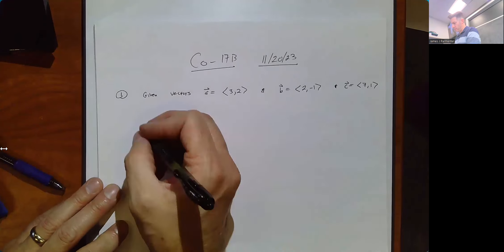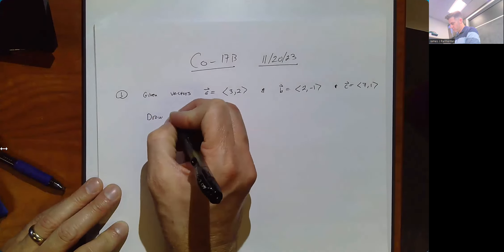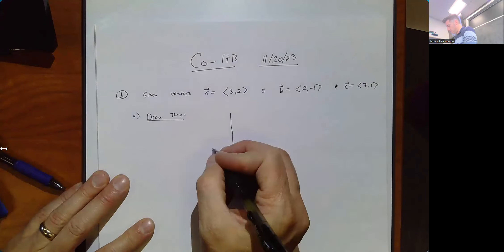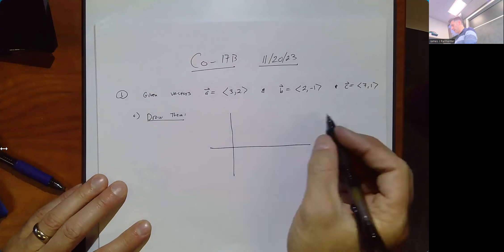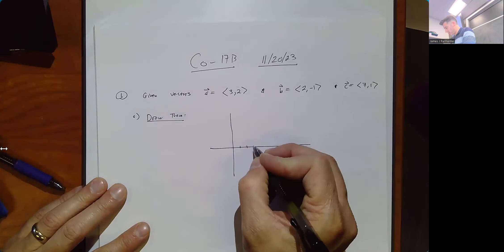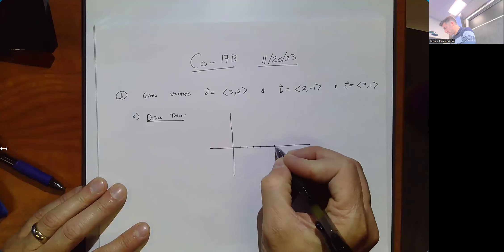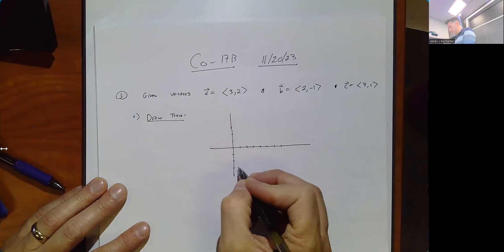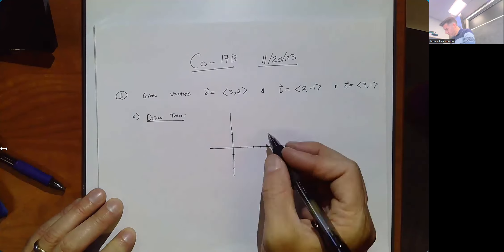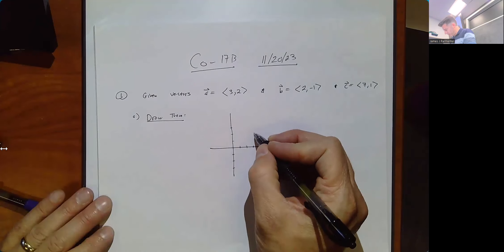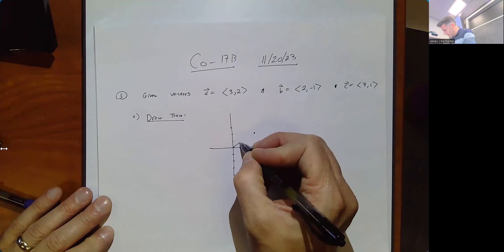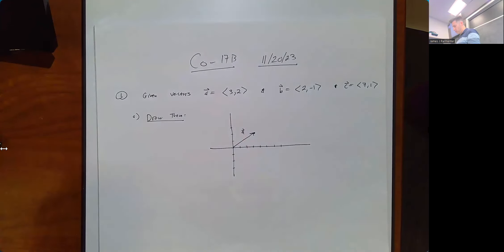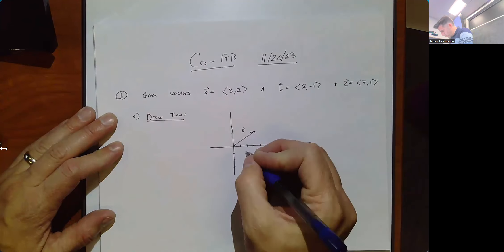Let's draw. I know I'm going to need a lot of x-room here, so I'm going to go 1, 2, 3, 4, 5, 6, 7, 8, 9, 10, 11, 12. So we're going to go over 3, up 2. There's my vector A. And B is over 2 and down 1.